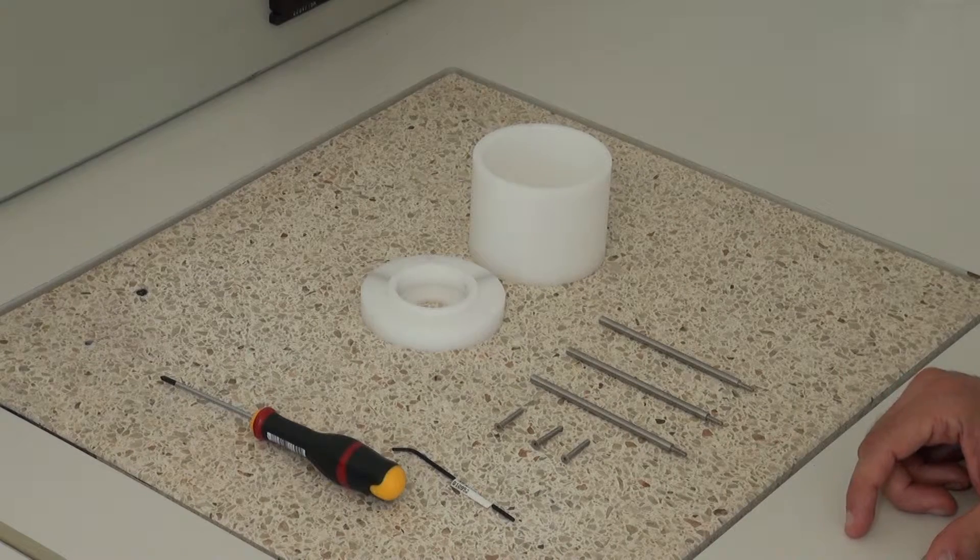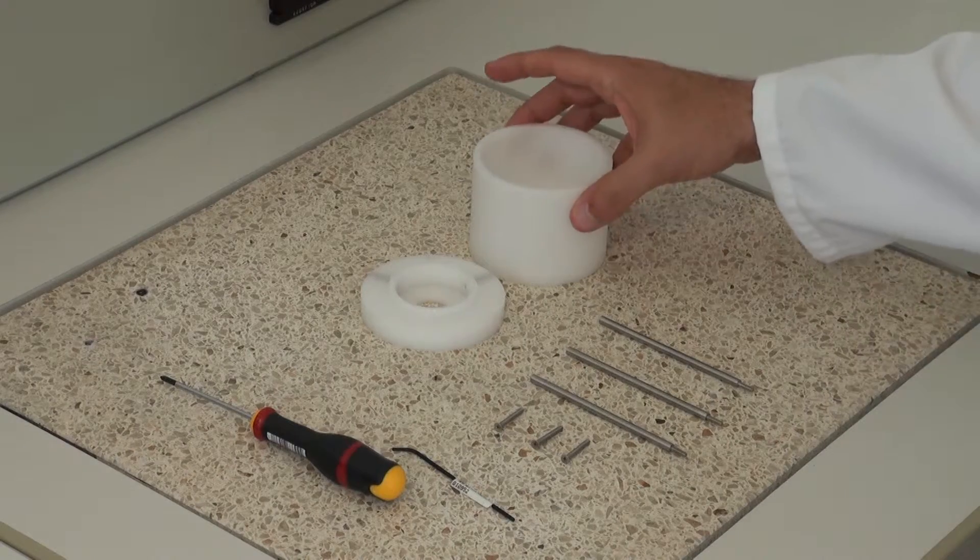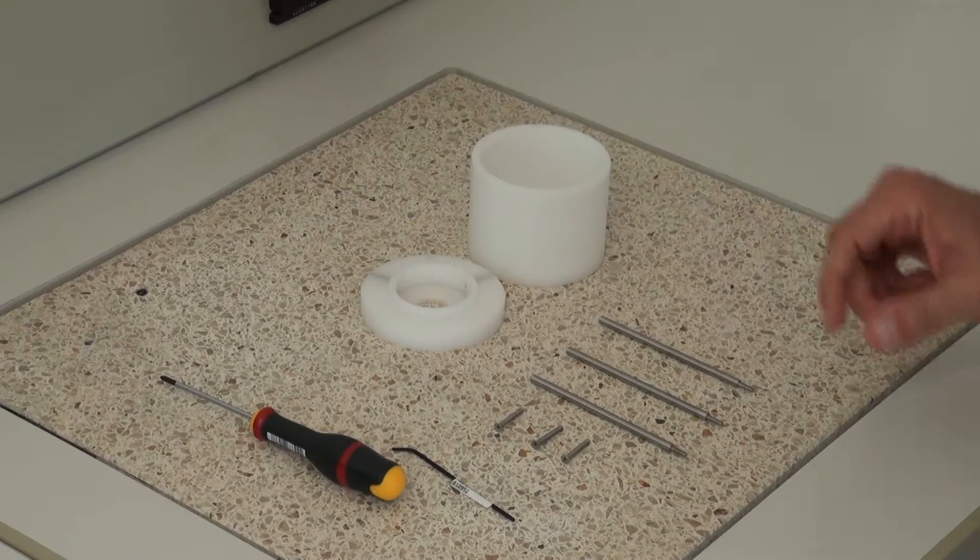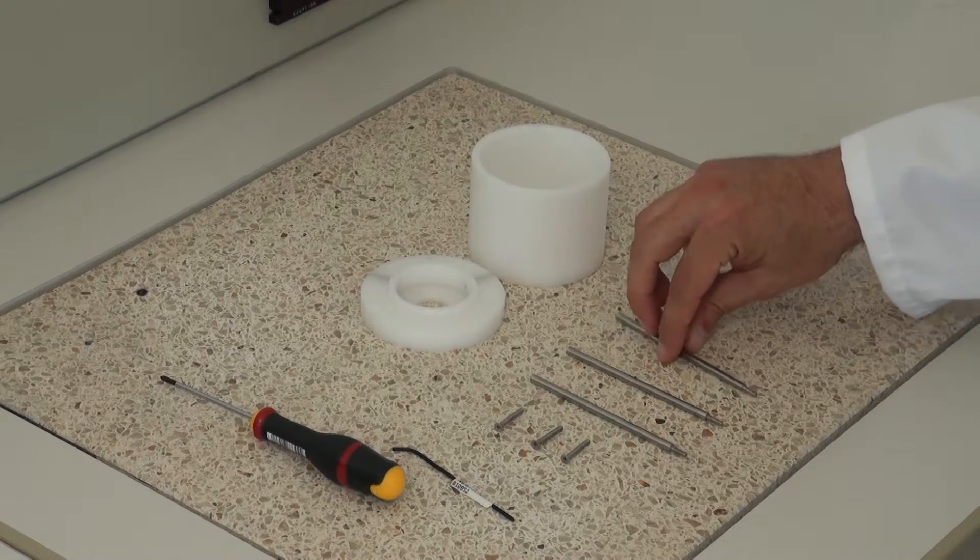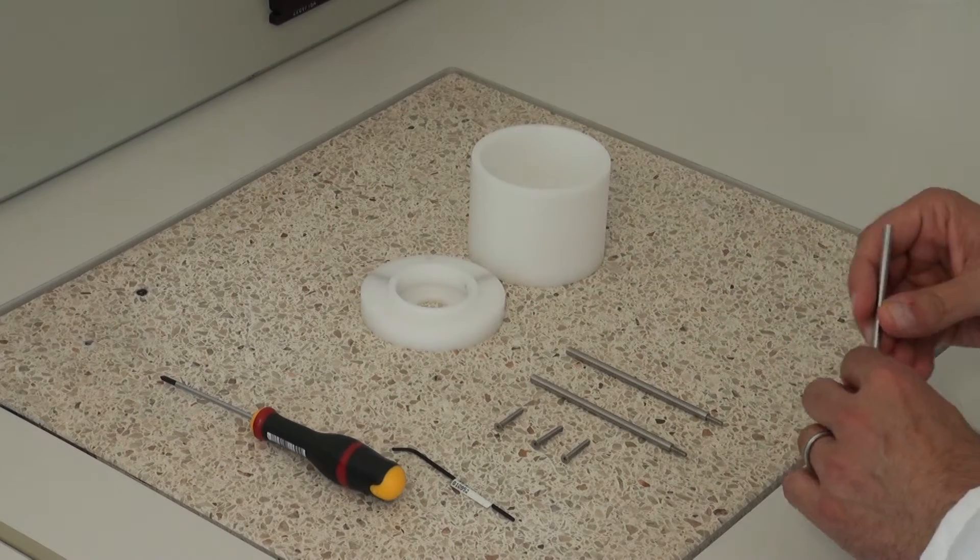Let's come to the construction. The protection cage consists of two pieces, a lid and a base. With the help of threaded rods, they are screwed together.